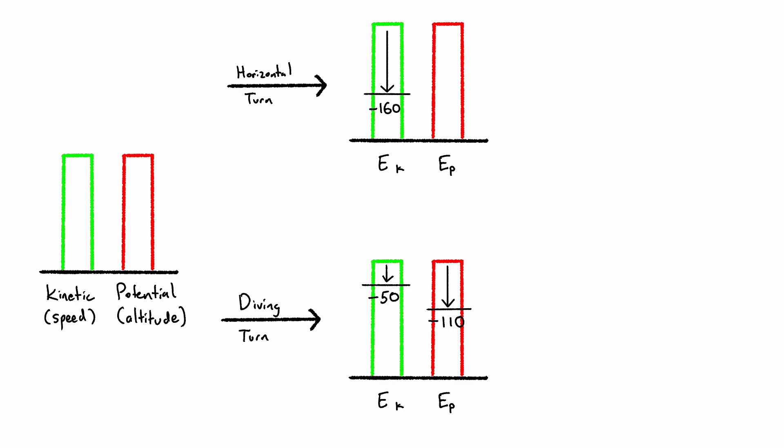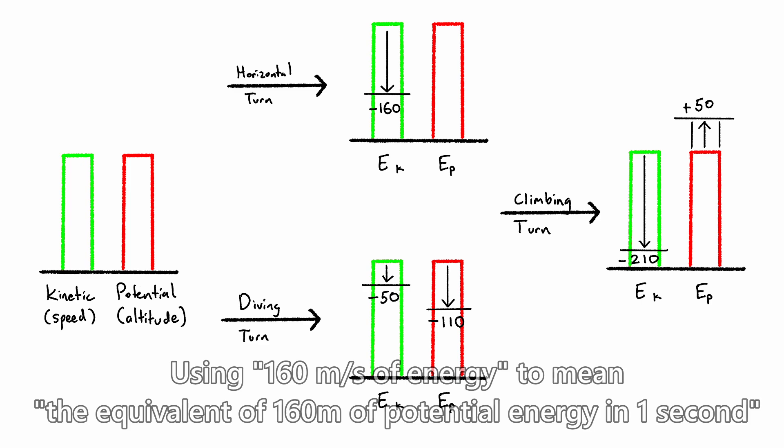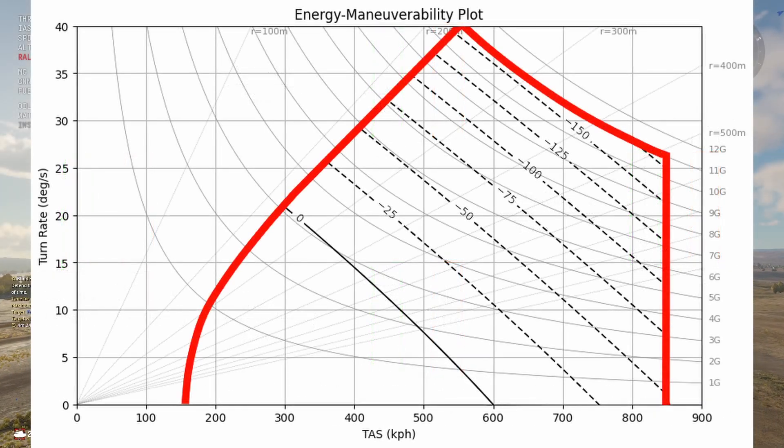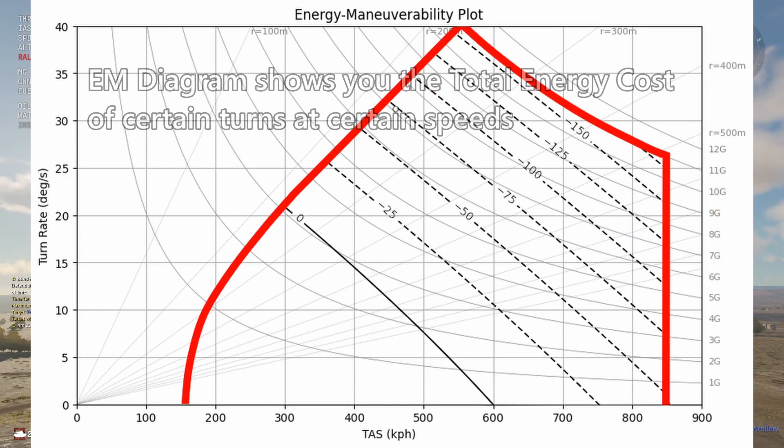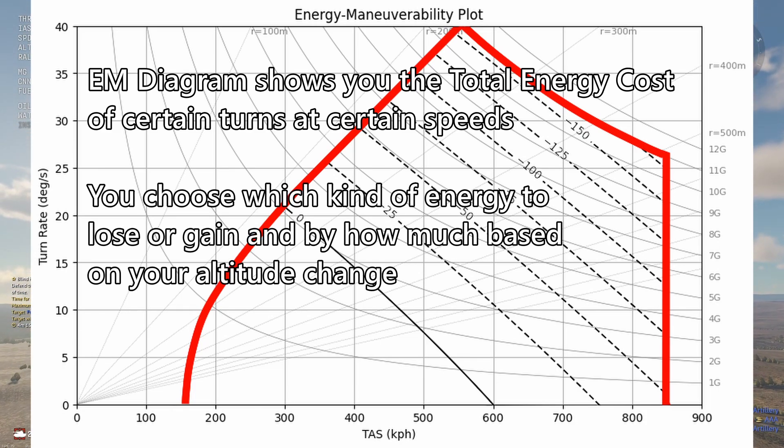Another possible option would be to perform this turn vertically and upwards, meaning that you would gain potential energy but lose more than 160 meters per second worth of kinetic energy. All in all, the energy lost in total would have to be 160 meters per second worth of energy, no matter what orientation you perform this turn in. You can apply this logic to any position on this graph. The specific excess power on the EM diagram just shows you how much total energy certain maneuvers will cost you.